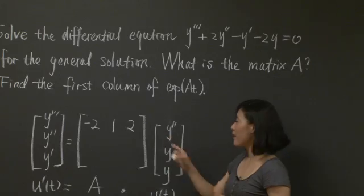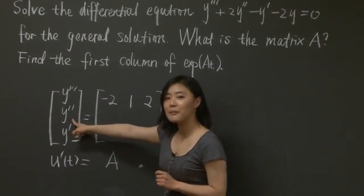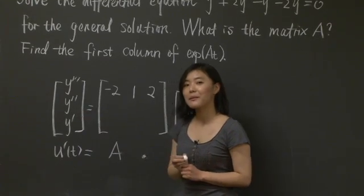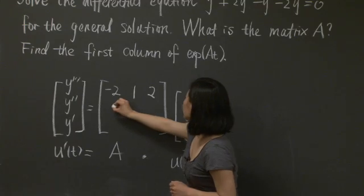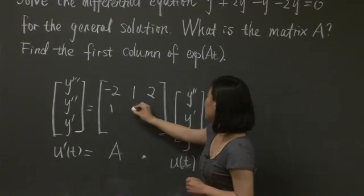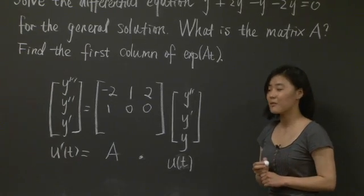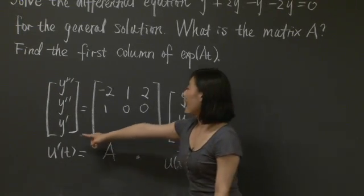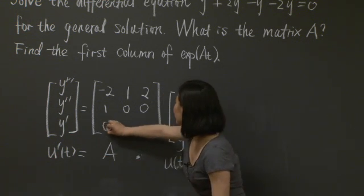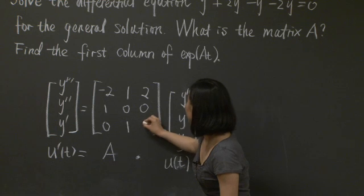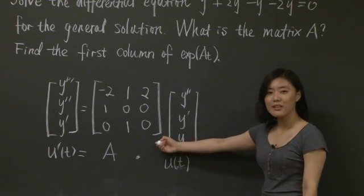Then look at the second coordinate — that's y double prime. y double prime is simply itself, so you write y double prime equals 1 times y double prime, then 0, 0. That's the second row. Same thing happens to the last row: y prime is again itself, so that's 0, 1, 0. That is our matrix A.